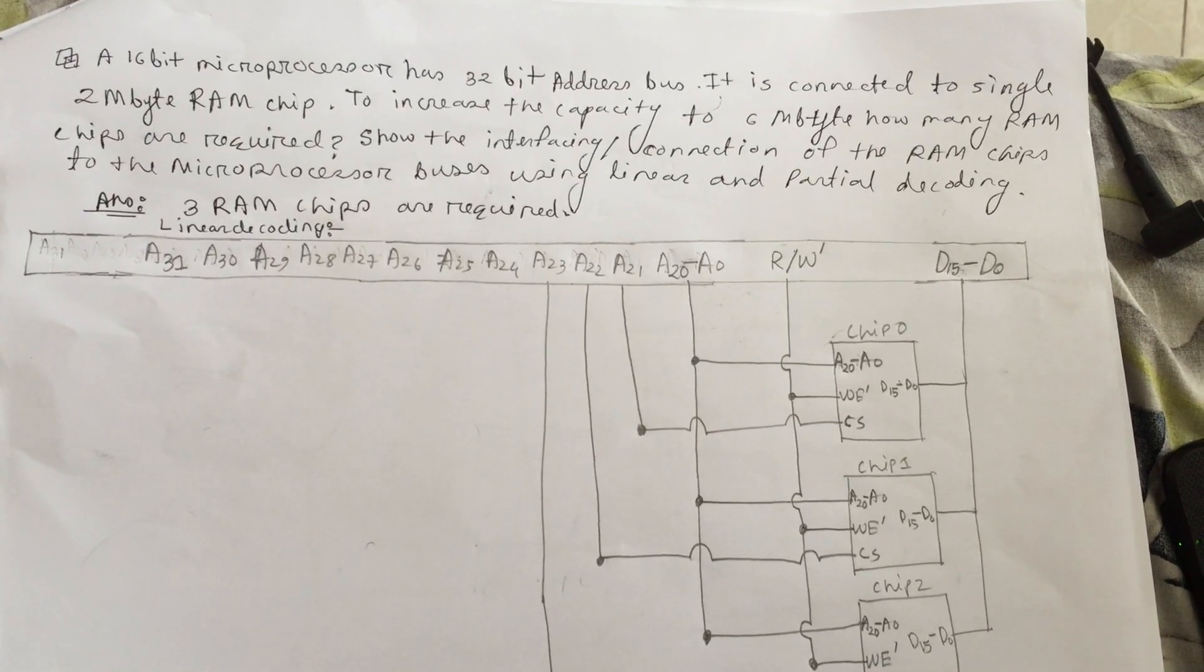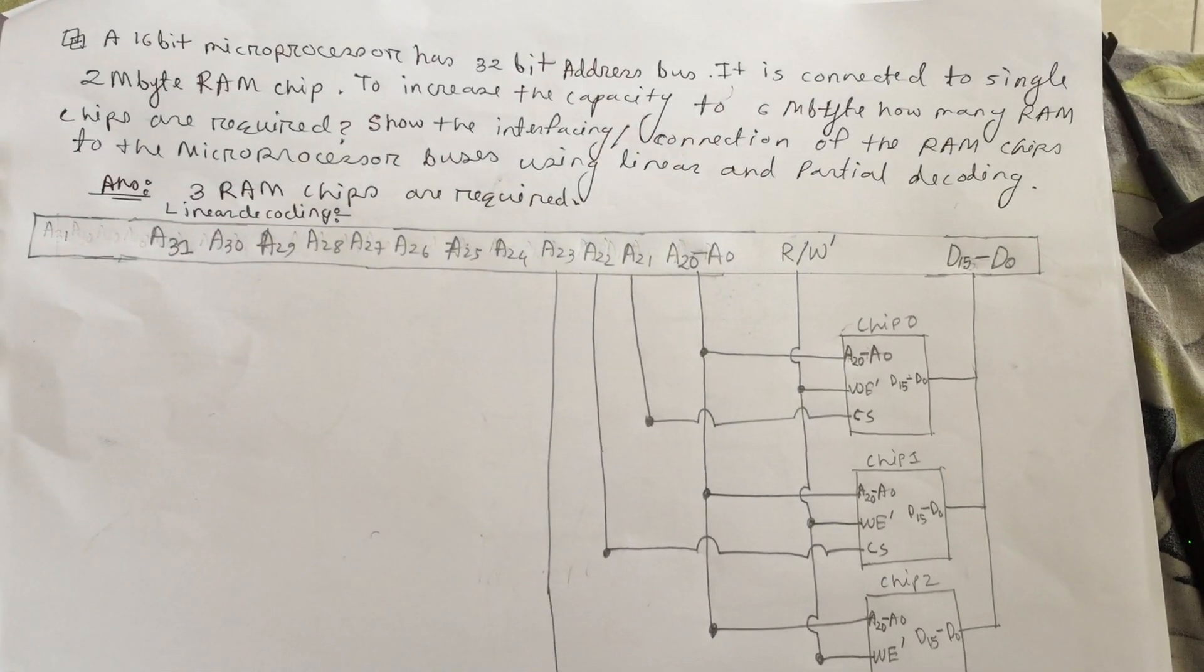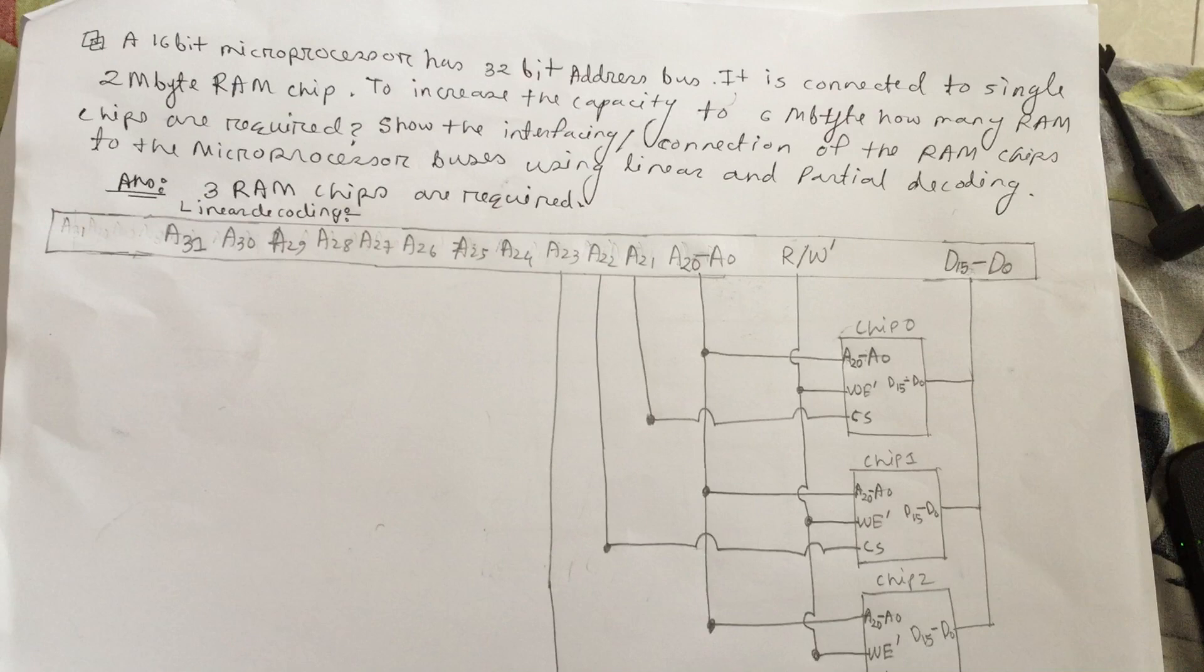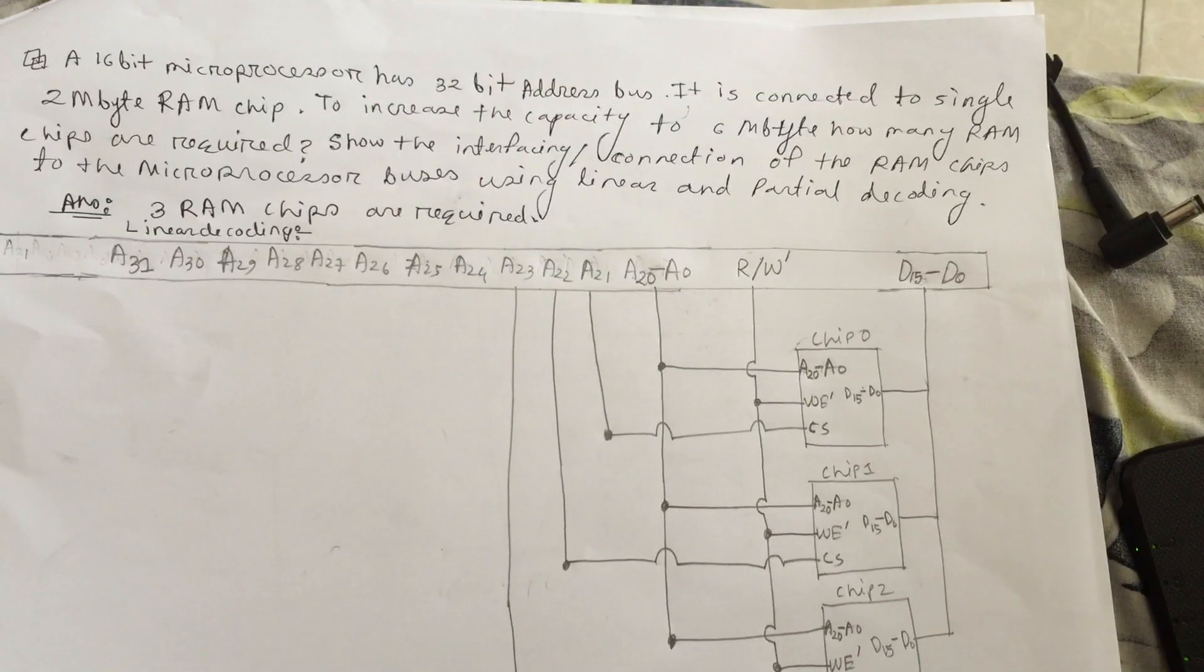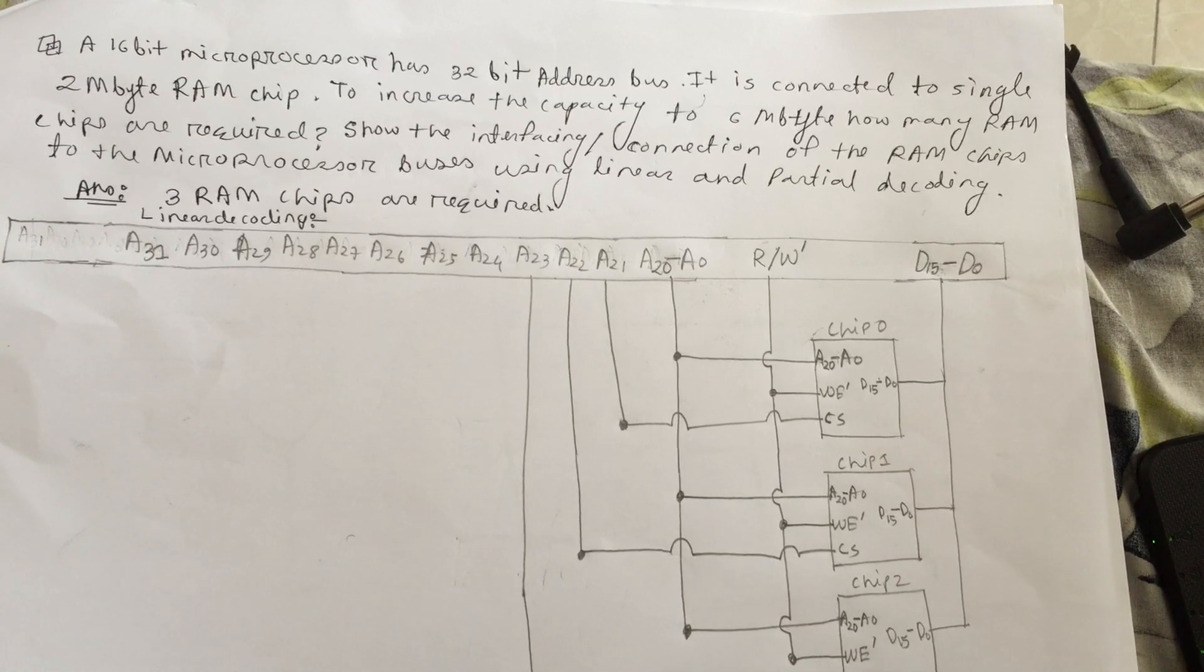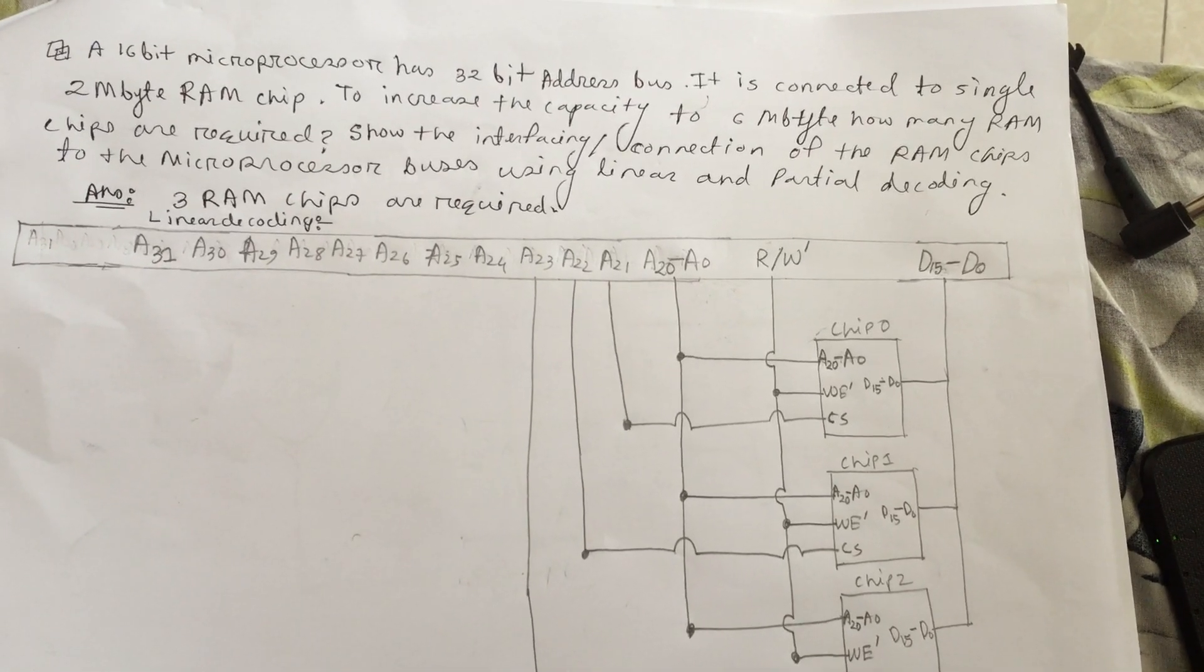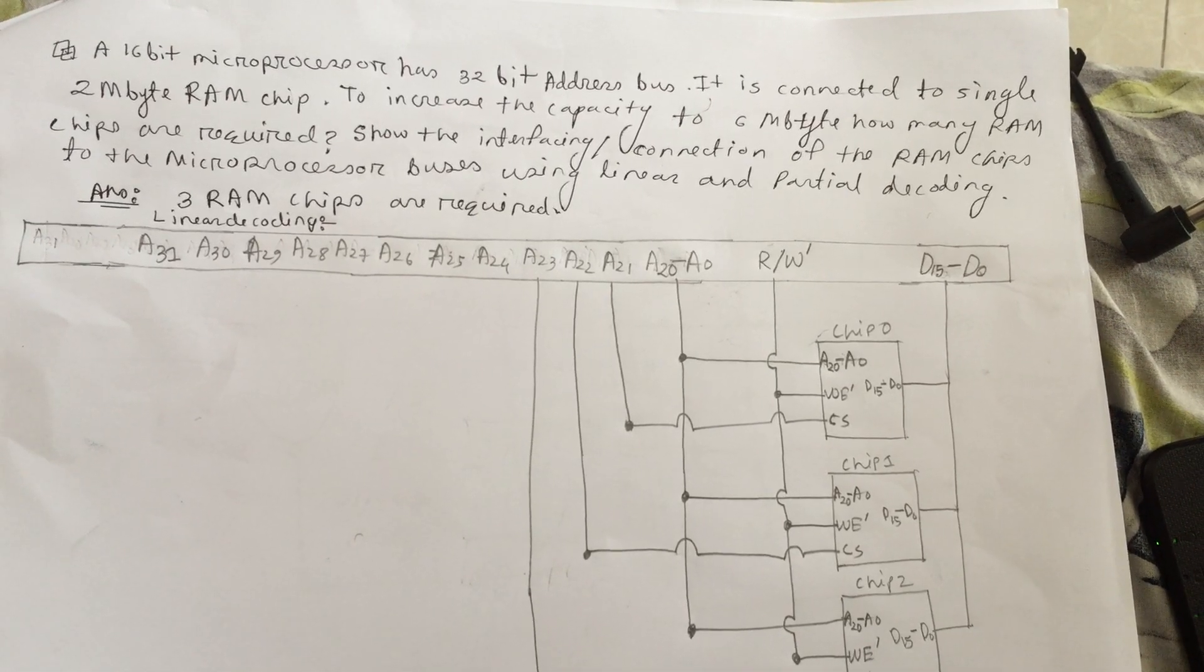Three RAM chips are required because we have to increase the 2 megabyte RAM chip to 6 megabyte. To make it 6, we have to multiply 3 with 2.